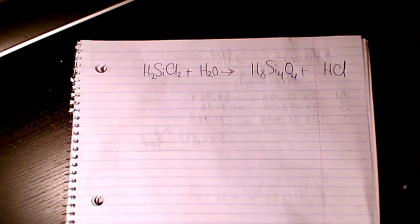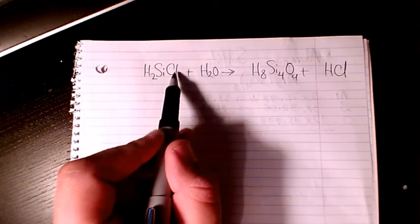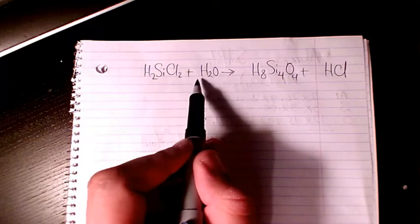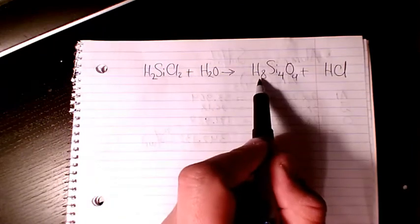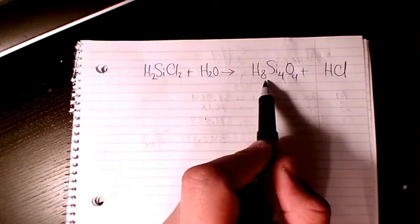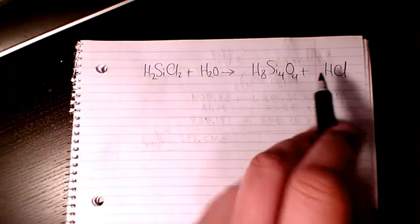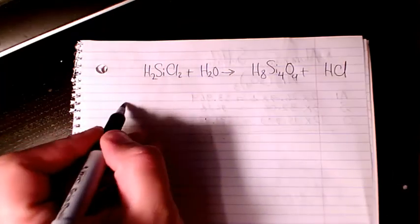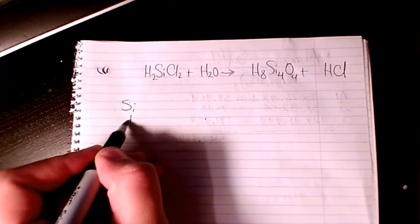What's up guys, this is Mas here, welcome to my channel. In this video I want to show you how to balance this chemical reaction: H₂SiCl₂ plus H₂O gives H₈Si₄O₄ plus HCl. So we have silicon, we have hydrogen, we have chlorine, we have oxygen.